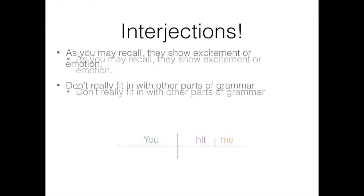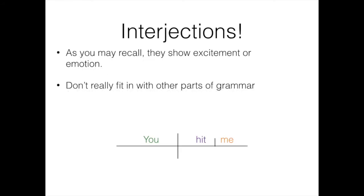So, if I had the sentence, ouch, you hit me, we can diagram that subject, verb, and direct object like usual, but the ouch actually goes above the subject on its own little line, like this.